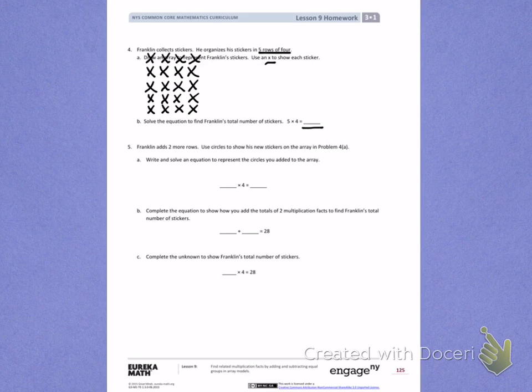Letter B. Franklin adds 2 more rows. Use circles to show his new stickers on the array in problem 4. So I need to add 2 more rows to my array I've already made, and I need to use circles. So I'm going to go back to problem A on number 4, and I'm going to add 2 rows of 4.